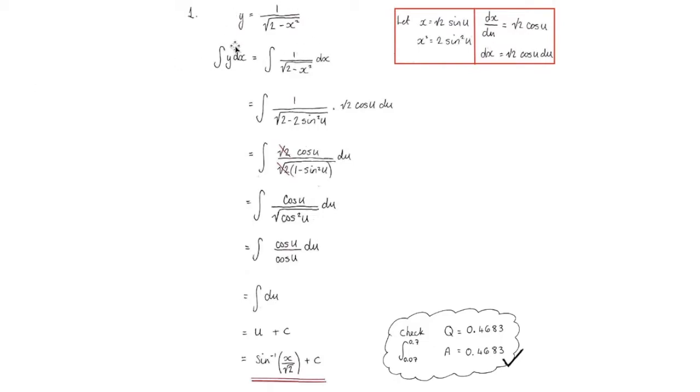We might have a question like this here that we're told to integrate. So we're going to integrate this 1 over root 2 minus x squared. We could use substitution to do that. We'd go all the way through until we get to our final answer. But how do we know in an exam if that answer is correct? Your check should look something like this. And you should have a check for almost every question.